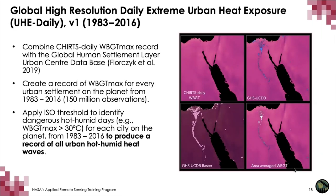To build the UHE Daily dataset, we combine the CHIRTS Daily wet bulb globe maximum record with the Global Human Settlement Layer Urban Center Database — a remote-sensing-derived estimate of how many people live in urban settlements for the whole planet, benchmarked at 1975, 1990, 2000, 2010, and 2020. With this, we can calculate the area-average daily maximum wet bulb globe temperature for each urban settlement on the planet for a 34-year period, yielding about 150 million daily observations.